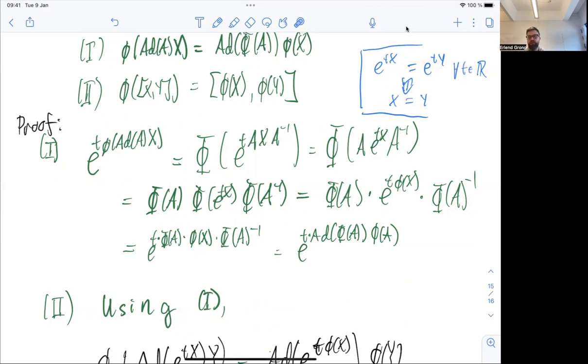Right? So we've seen earlier that there are matrices. So when you take the exponential map, you get the identity without them being the zero matrix. Right? But if you show that they're the same for all t, then they have to be the same vector in the Lie algebra or the same matrix in the Lie algebra.